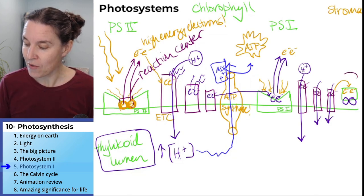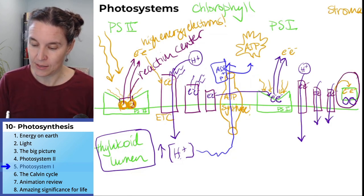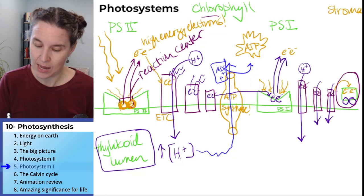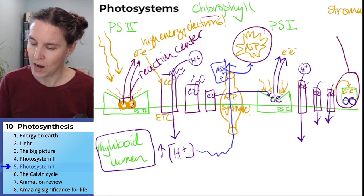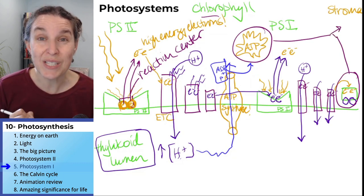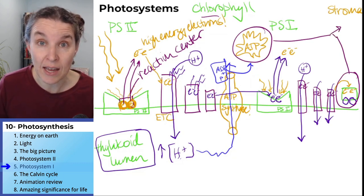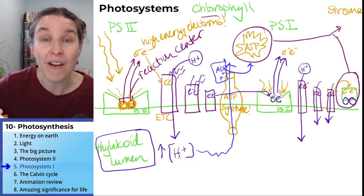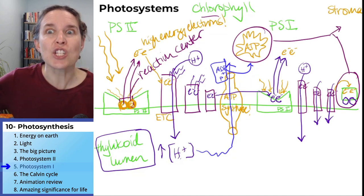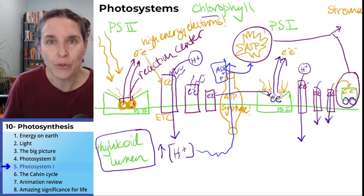We have our two products, you guys. We've got our ATP and we've got our high energy electron carriers. Those guys are headed to the Calvin cycle. They're going to provide the energy to fuel glucose production.